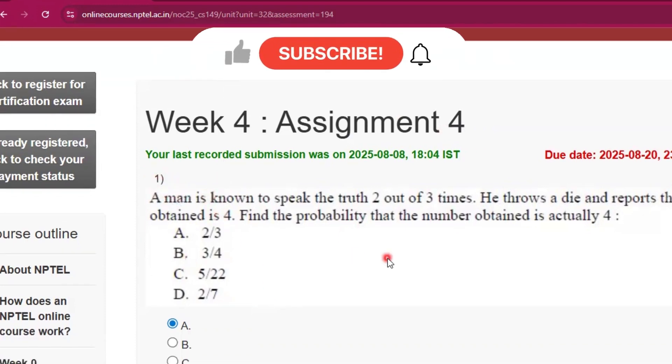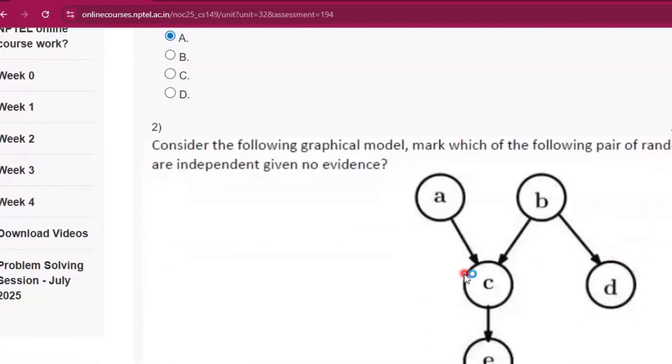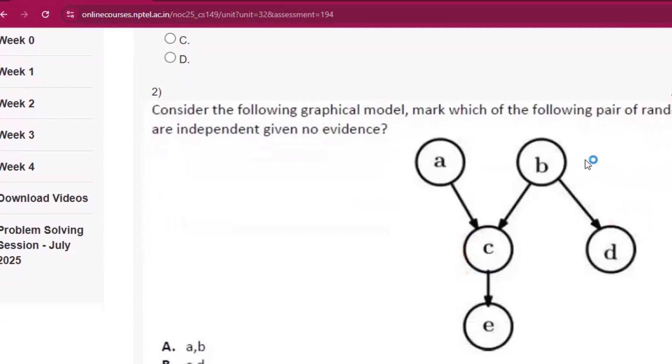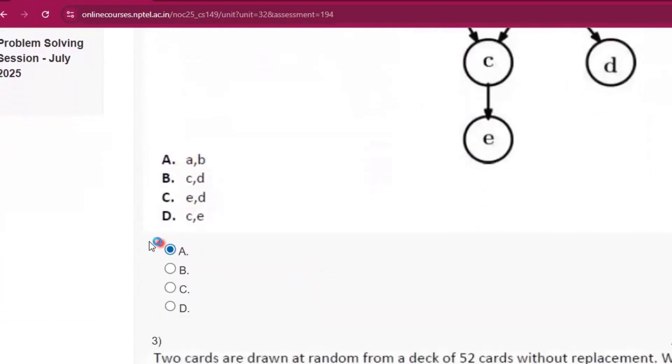Now the first question. The answer will be option A, that is 2 by 3. Now the second question: consider the following graphical model. The pair of random variables are independent given no evidence. So the answer will be A and B, that is option A.